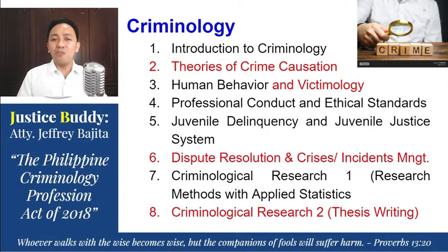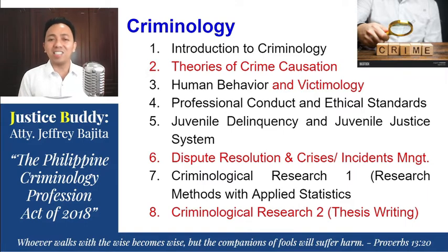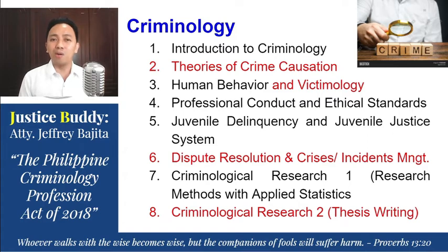Number 4 is the reinvention of our previous ethics and values. This is now Professional Conduct and Ethical Standards. Number 5 is now Juvenile Delinquency and Juvenile Justice System. We are now focusing on the Juvenile Justice System because today's delinquents are tomorrow's criminals if we will not be able to handle these juvenile delinquents properly.